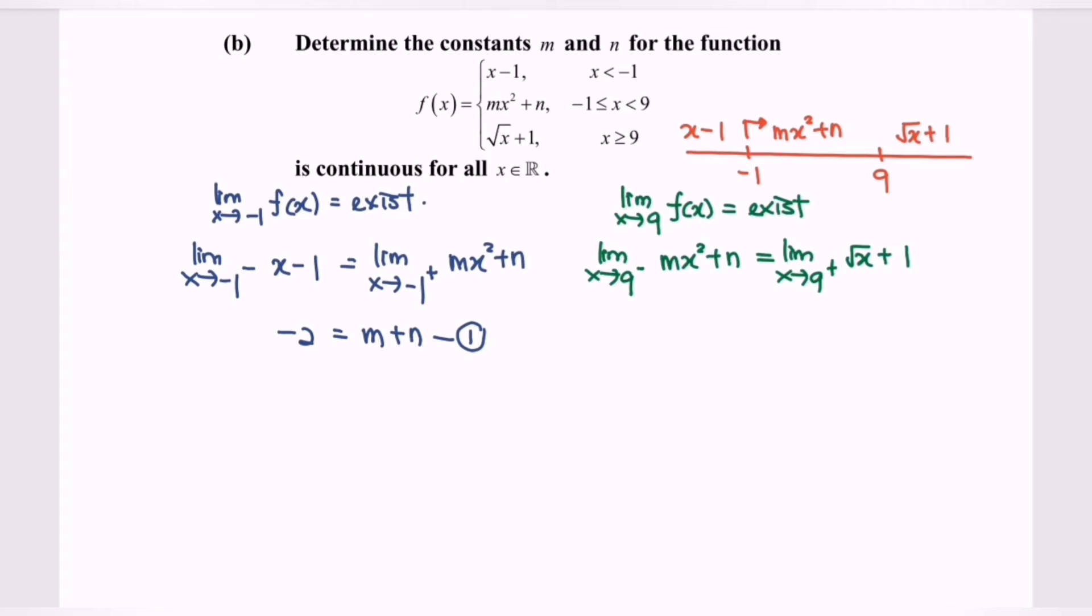Substitute the value of 9 for the left hand side and we will have 81m + n, which is equal to square root of 9. We will obtain 3. 3 plus 1 we will have 4. So we will have the second equation.